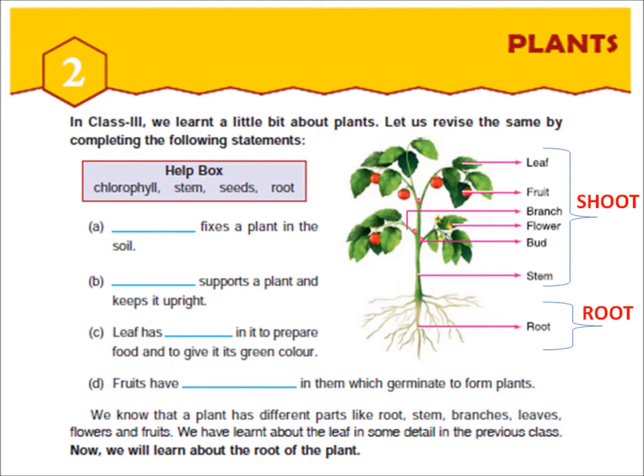Look at the picture given in the book carefully. It consists of two main parts. The parts of the plant which remain under the ground are called the root. The plant also has stem, branches, leaves, flowers and fruits above the ground. All of you know that fruits contain seeds inside them.